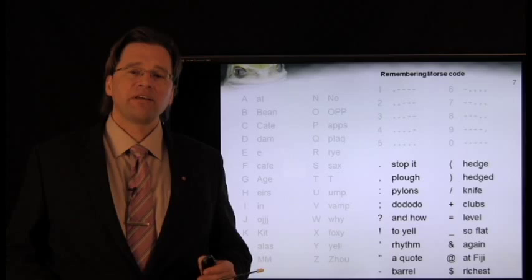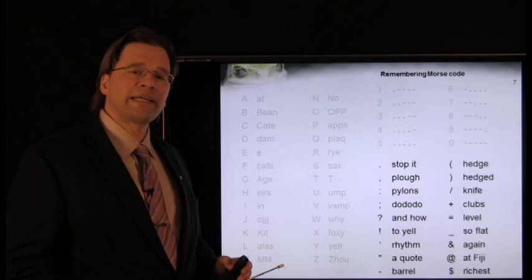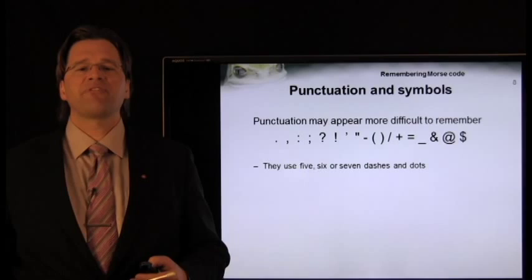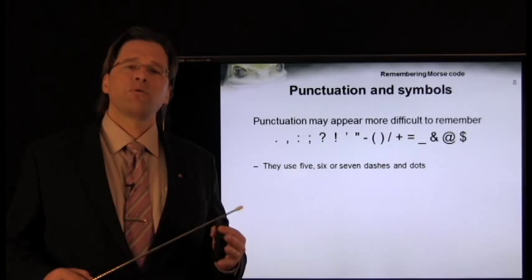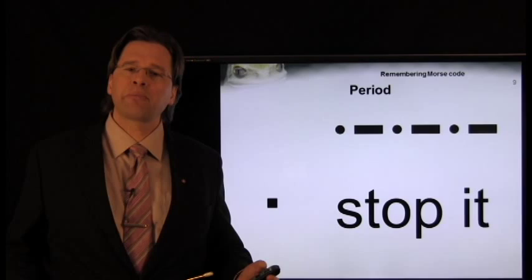We're going to conclude by looking at Morse code for punctuation and symbols. Now, punctuation and symbols initially appears to be more difficult because they use 5 through 7 dots and dashes. But remember, we're just learning a mnemonic word or phrase. So, for example, the period can be remembered by just remembering stop it.